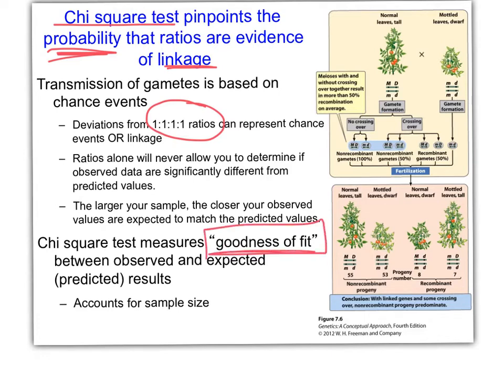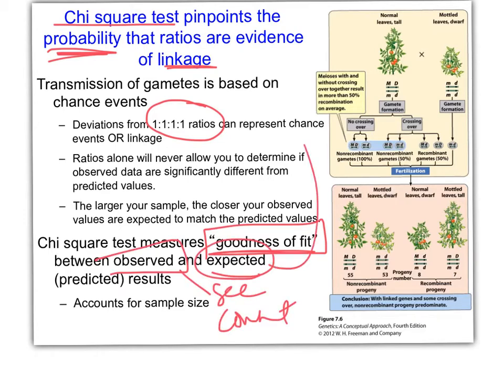The chi-square test compares what we observe — what we count — to what we would expect based on a 1:1:1:1 ratio.